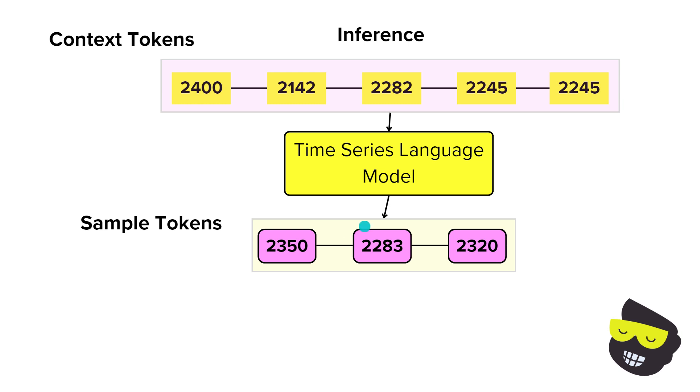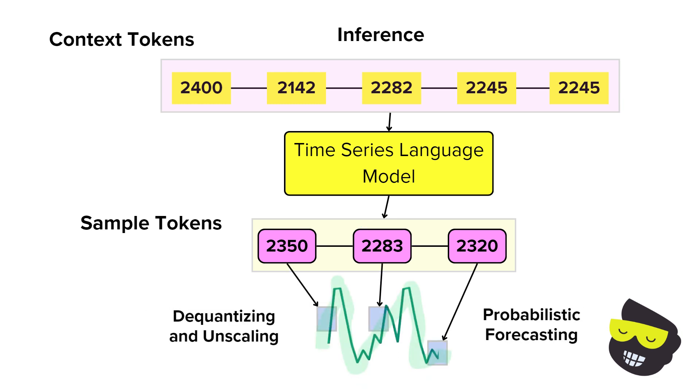But remember, we can have multiple things. And this is the probabilistic forecast. So the model takes multiple future trajectories to provide the range of possible outcomes. These sample tokens are then de-quantized and unscaled back to their original form. And this produces the final probabilistic forecast.